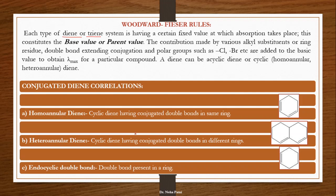The first term is homoannular diene. 'Homo' means same, so if the diene — two double bonds — are present in the same ring, it is called a homoannular diene. At the same time, it is known as a heteroannular diene if the conjugated double bonds are in two separate rings — ring A and ring B — so one double bond is in ring A and the other is in ring B.